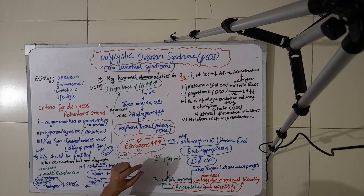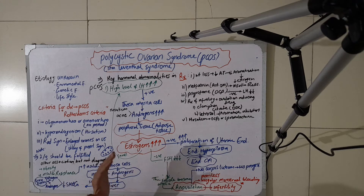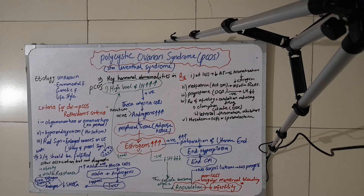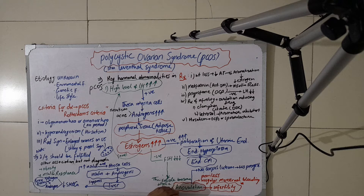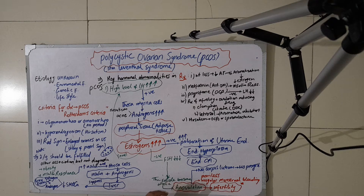High estrogen levels first give negative stimulation to the pituitary, causing a decrease in the production of follicle-stimulating hormone (FSH). Since FSH is the main hormone required for maturation of follicles, when FSH is decreased, the oocytes do not become mature. As a result of this failure of maturation, ovulation does not happen, and the patient mainly presents with a complaint of infertility.